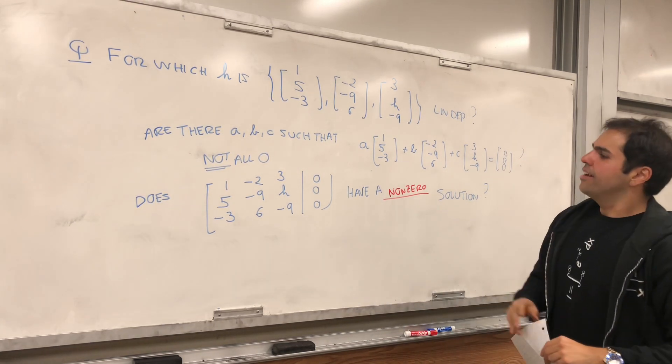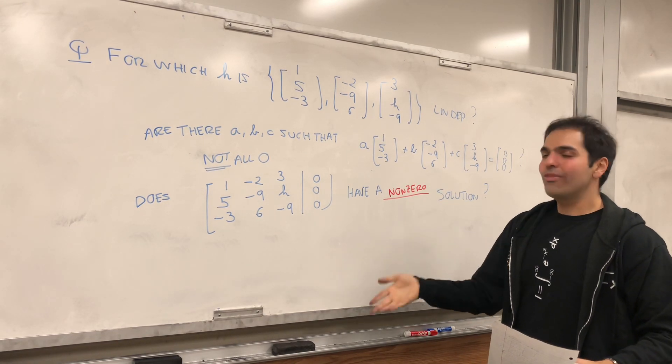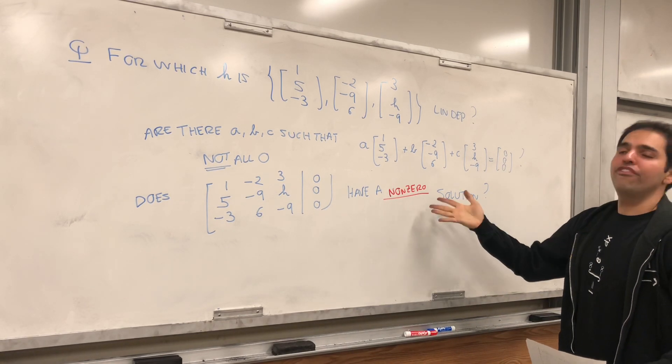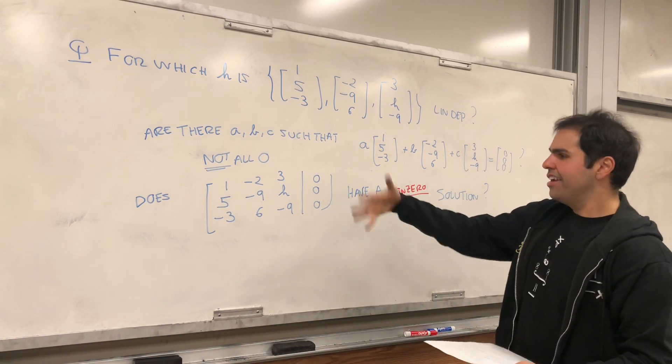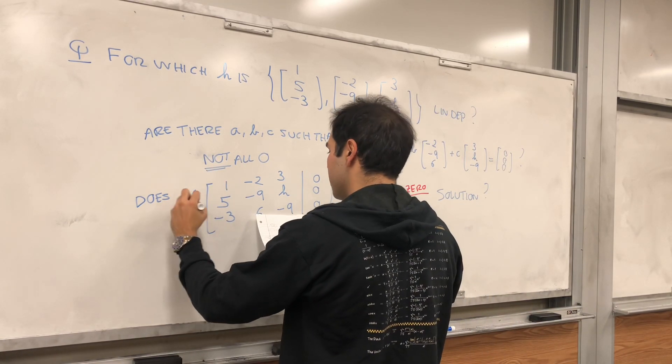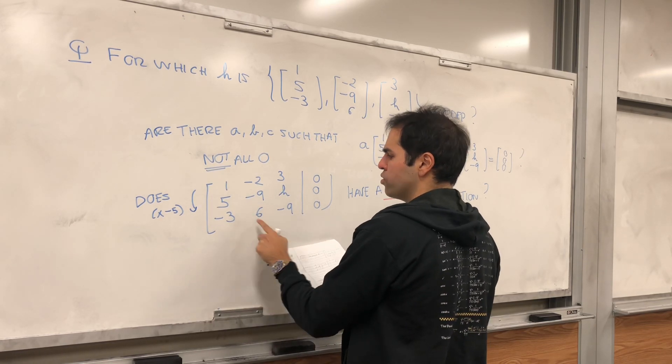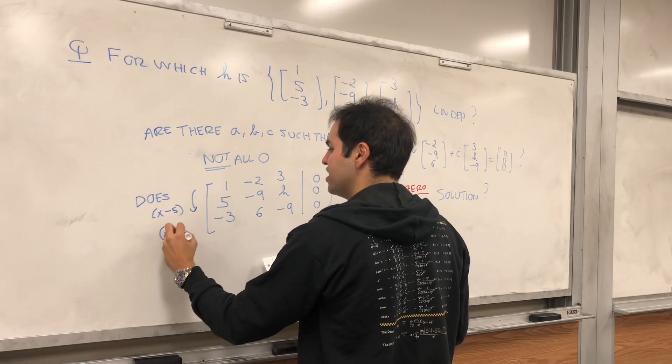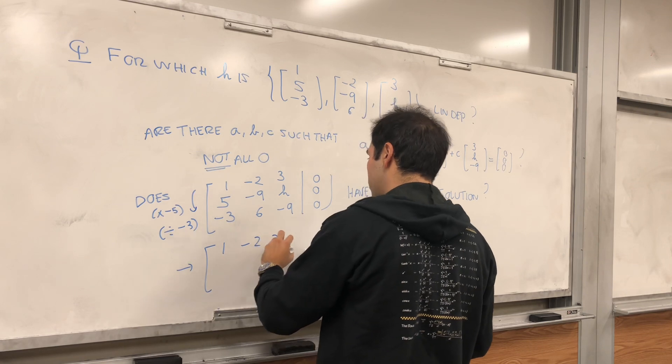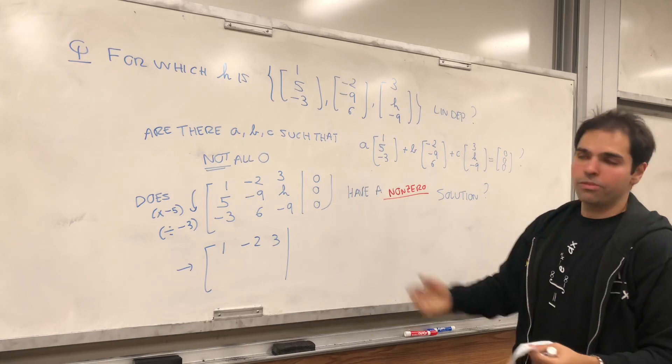Now, here is a stupid way of doing it and a smart way. The stupid way is actually solving the system. We don't have to do that. We just need to figure out if it has a non-zero solution. So let's take this and row reduce. You can factor out minus 3 if you want and you get 1, minus 2, 3. Ax = 0 is so easy. You don't have to worry about the right hand side.